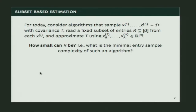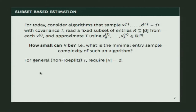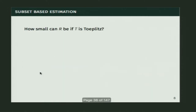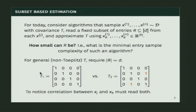The first question is: how small can R be? What is the minimum entry sample complexity to actually estimate the covariance matrix? For general covariance matrices, could we do sublinear entry sample complexity? The answer is no. Our covariance matrix could be the identity, or there could be a correlation between two randomly chosen positions x_j and x_k that are perfectly correlated. In order to notice that x_j and x_k are correlated, you must read both entries — so entry sample complexity for general matrices is at least d.